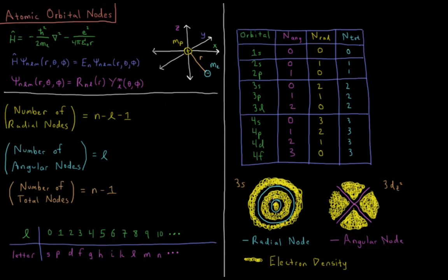We have an example down here. In the 3s function, we have two radial nodes, points where you have zero density. And in the 3dz squared function, there are two angles, two values of theta, where you have no electron density at that angle.